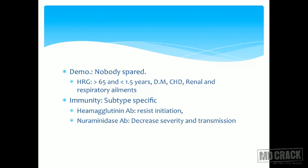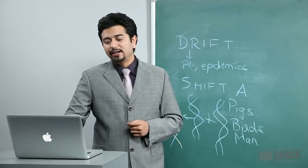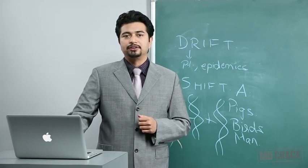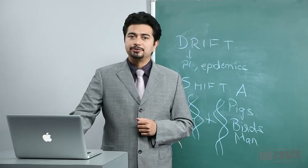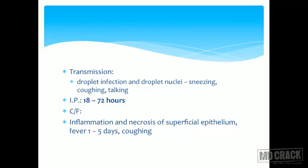Immunity is subtype-specific and is directed against hemagglutinin and neuraminidase antigens. Hemagglutinin antibody resists the initiation of infection, while neuraminidase antibody prevents the severity and transmission of disease — attacking two different modes of disease spread. Transmission occurs through droplet nuclei and droplet infection via sneezing, coughing, and talking.